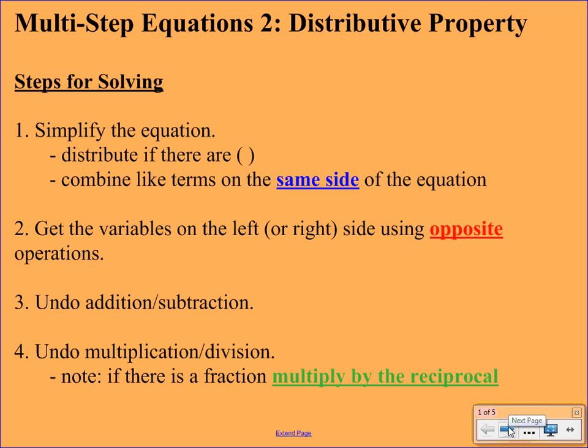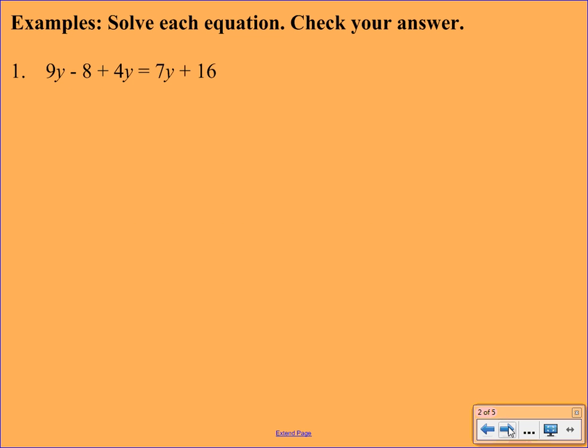Okay, we're ready for some examples here. This first equation here does not have any parentheses, but we just wanted to review with you the combining like terms thing. So the first step is to simplify the equation. And right away I notice that I have two terms on the left-hand side that have variables. So I can put those together. So I have a positive 9y and a plus 4y, which will make 13y. Everything else will come down.